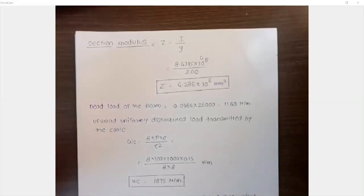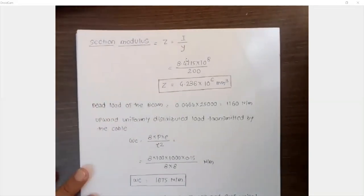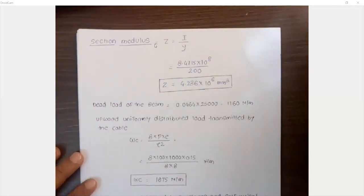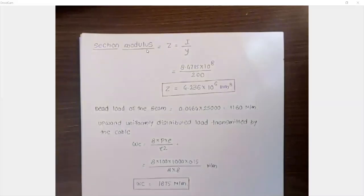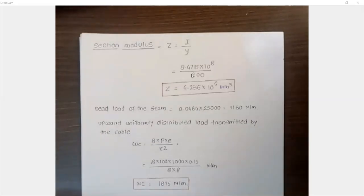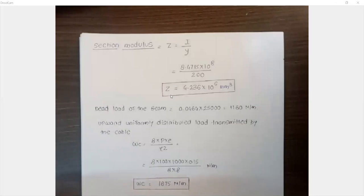After calculating the moment of inertia, we calculate the section modulus. Section modulus Z equals I divided by y, where y is the distance from the neutral axis to the extreme fiber. Since this is a symmetric beam with depth 400 mm, the centroidal axis is at the center, so y = 200 mm. The section modulus Z = 4.236 × 10⁶ mm³.